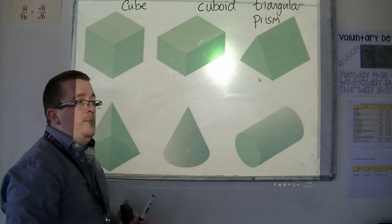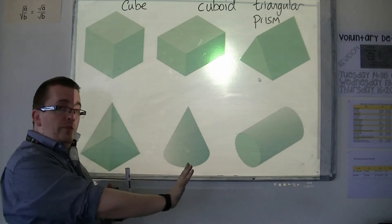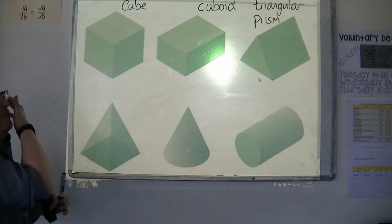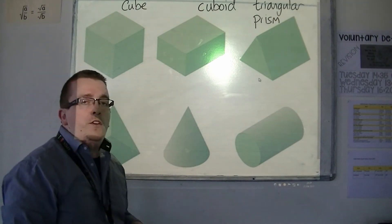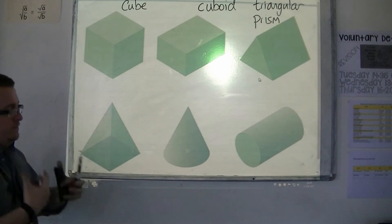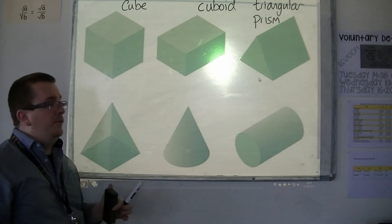You could have a pentagonal prism or a hexagonal prism, so a hexagon that has been pushed all the way through. But for a triangular prism, you could think of it like a Toblerone for example. That's a triangular prism.